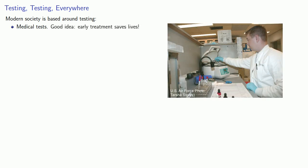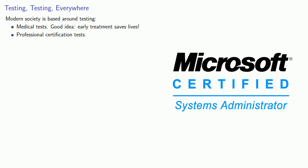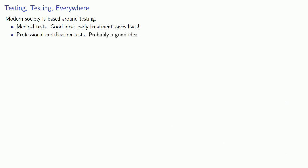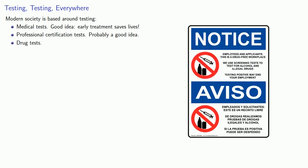For example, a medical test. We tend to approve of these because early treatment saves lives. There are professional certification tests. We like it when the people we employ are actually competent. Drug test. You probably want to know whether the pilot of your airplane is on opiates. Whether it's so important that the recipient of food stamps be drug-free is not quite as clear.